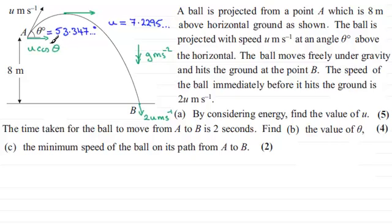So this component of u, which is u cosine theta, u cos theta, is going to be exactly the same as the speed here, u cos theta then. And that will be our minimum speed.